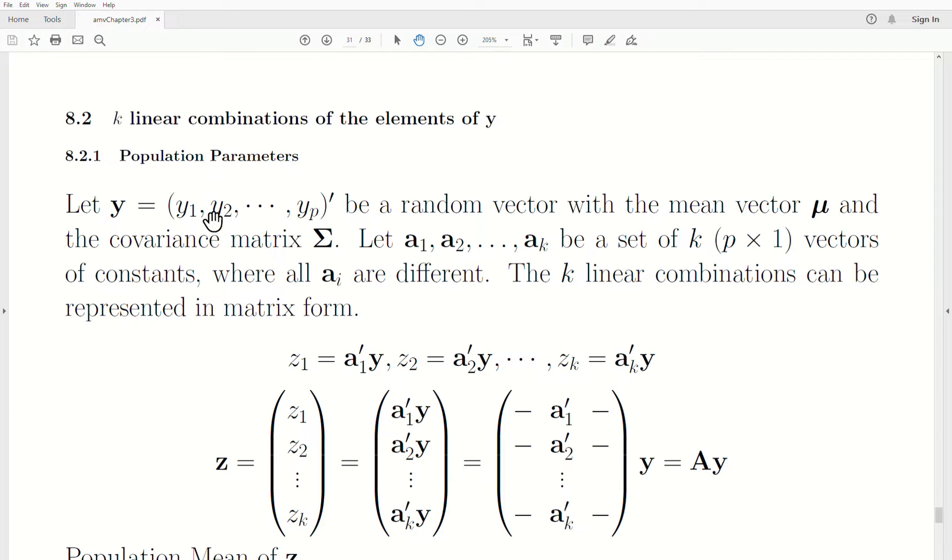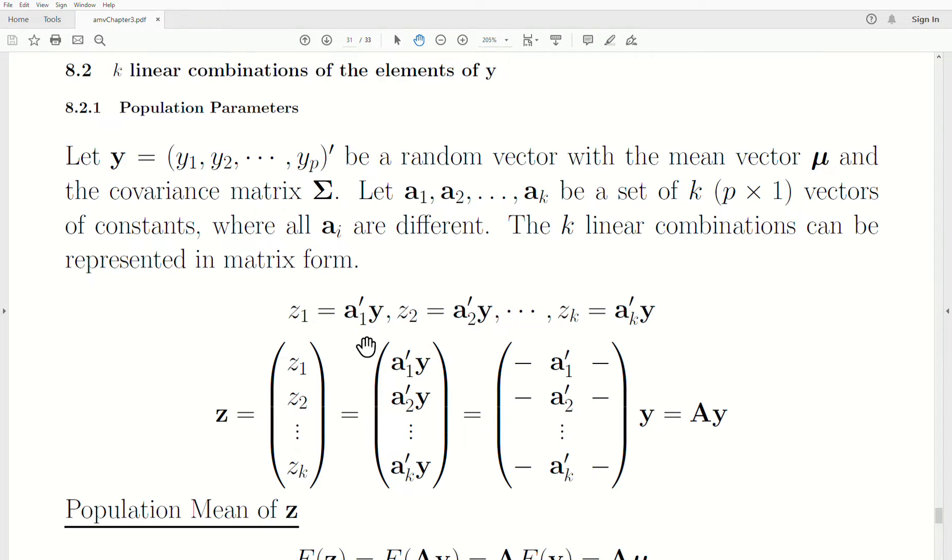Let's look at the population parameters first. So let y be a p by one random vector with mean vector mu and variance-covariance matrix sigma. Let a1, a2, through ak be a set of k p by one vectors of constants where all ai are different.